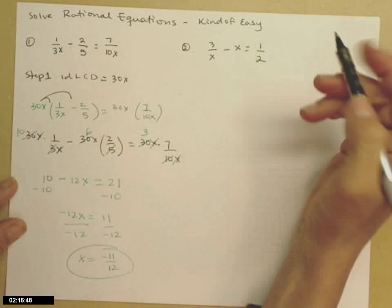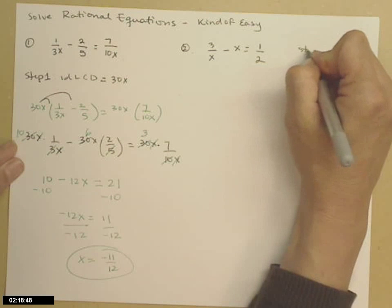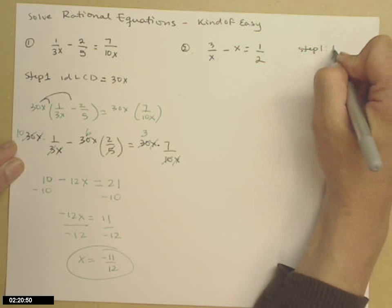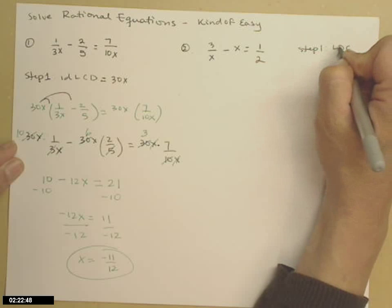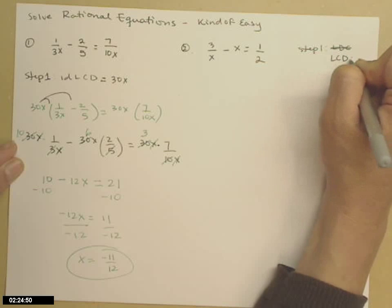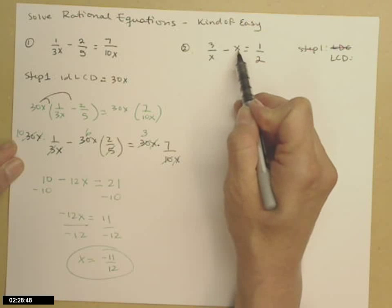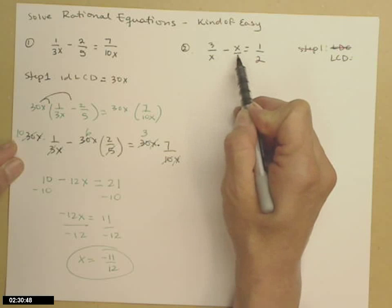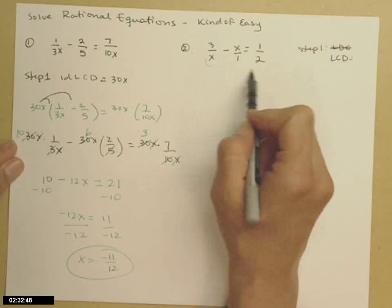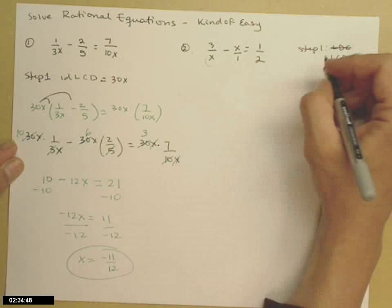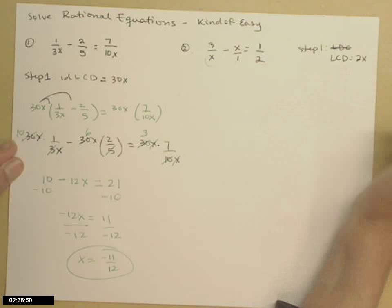The next example, same thing. Step 1, figure out what the LCD is. So the second term on the left doesn't have a denominator, so you can put a 1 there if you'd like. Looking at the three denominators, x, 1, and 2, the LCD would be 2x.